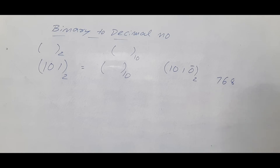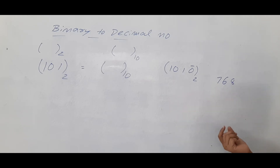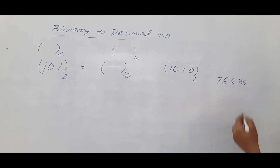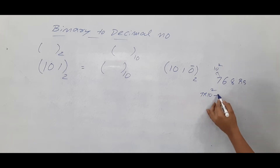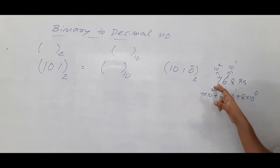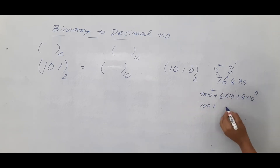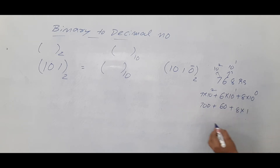To understand weights, think of the decimal number 768. You say '768' because 7 is at the hundreds place — that is, 7 × 10². Then 6 × 10¹ gives 60, and 8 × 10⁰ gives 8. So 700 + 60 + 8 = 768. Each digit has a positional weight based on powers of 10.